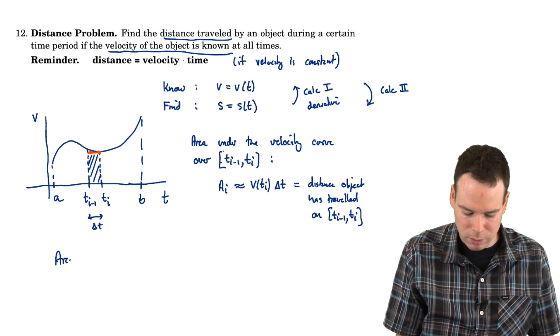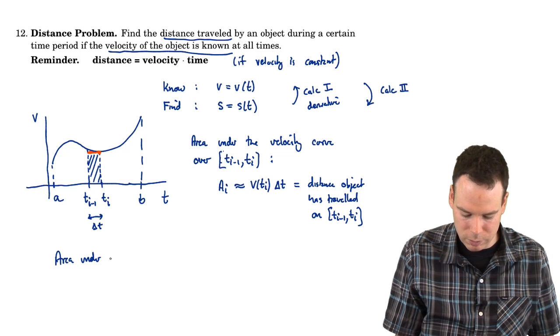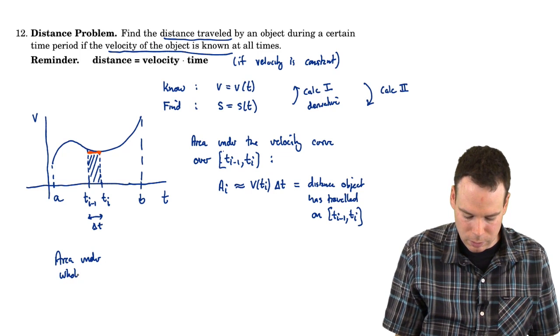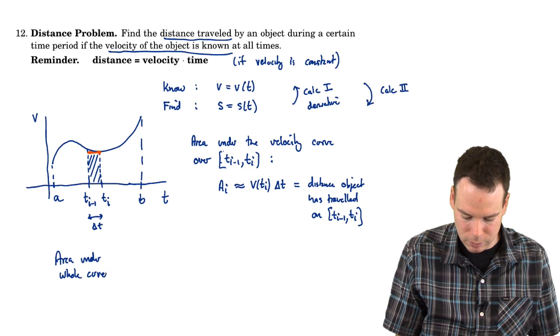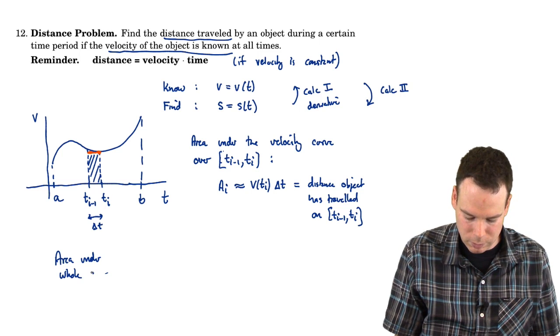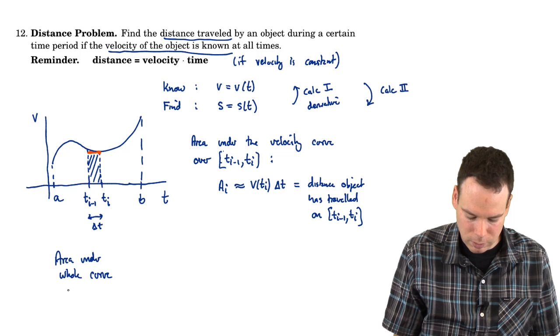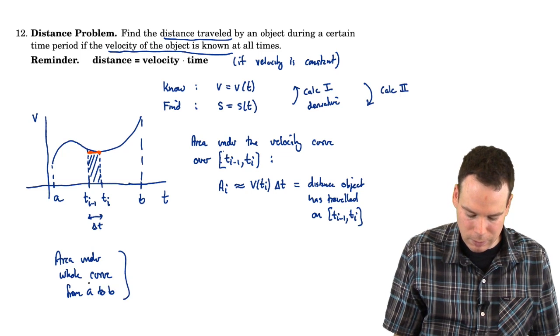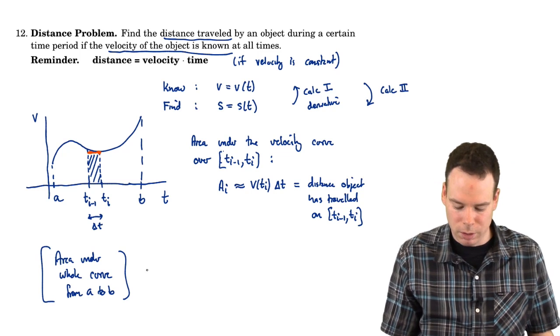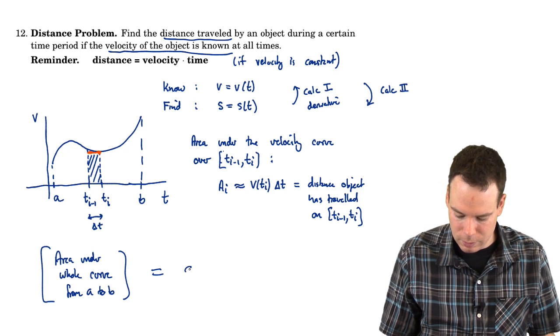So what does that mean? It means that the area under the curve, in general, under whole curve, under whole curve, from a to b, that thing there, the area under the whole curve, is the distance traveled.